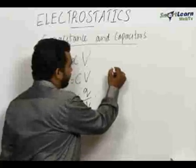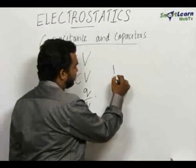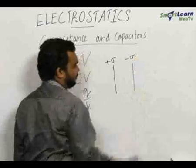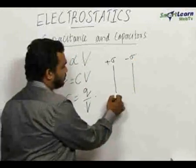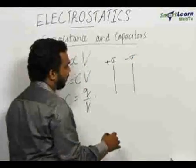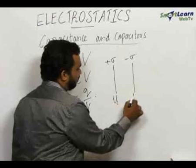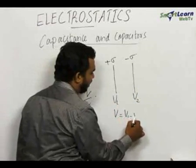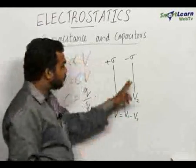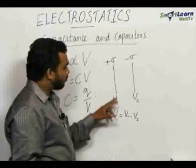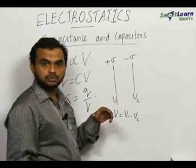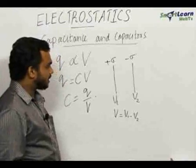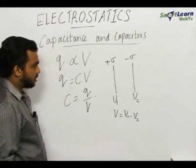In a parallel plate capacitor, there is a positively charged plate as well as a negatively charged plate. The total potential difference becomes v1 minus v2. If there were no second plate, there would be only v1. To decrease the potential difference, we introduce the second plate, which is the negatively charged plate.